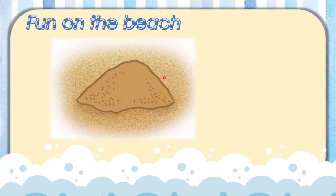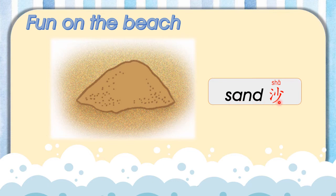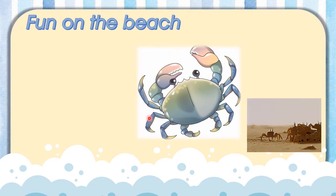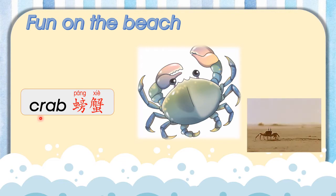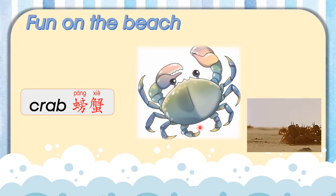So, can you see this? What is this, class? This is called sand. There are a lot of sand at the beach. We also can find this when we are at the beach — this is a crab. See how the crab moves at the beach like this. Do you all like to eat crab?